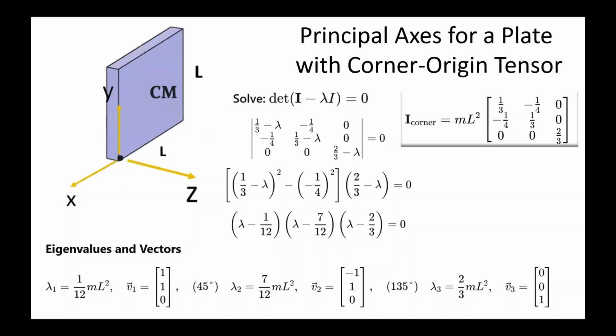To find the principal axes we need to compute the eigenvalues and eigenvectors of the tensor. Diagonalizing a matrix is something that's done all the time in physics. If you don't know this procedure it's really not that hard. I recommend you look into it. We solve the characteristic equation to find the eigenvalues and eigenvectors.